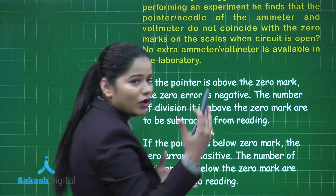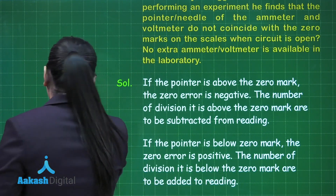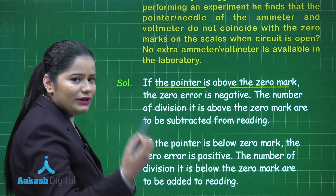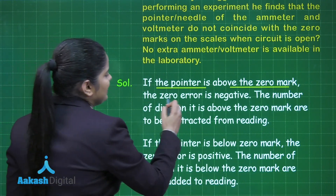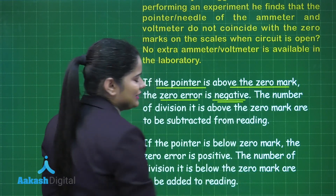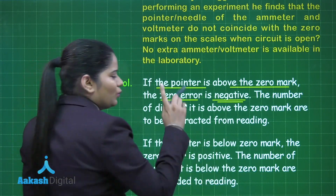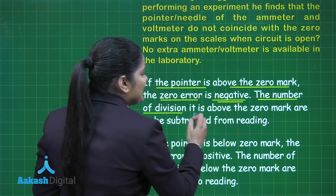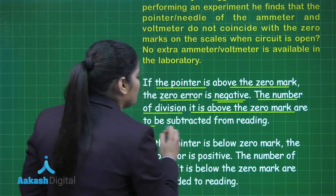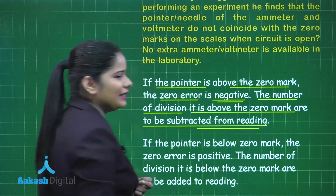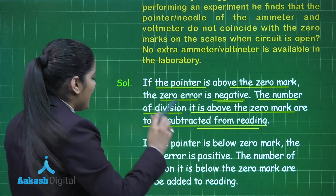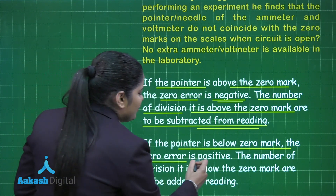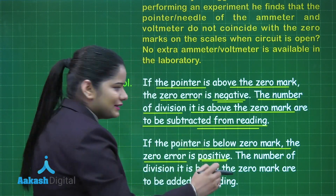You need to mention how the student should handle the zero error. If the pointer is above the zero mark, the zero error is negative. In that case, the number of divisions it is above the zero mark are to be subtracted from the reading to get the correct value.